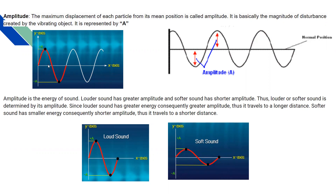If we look at this in graphical form, the maximum peak — the crest — represents the maximum height attained, represented by positive A. Similarly, the minimum point, which is the maximum valley on the negative side, is known as negative A. So positive A and negative A represent the positive amplitude and the negative amplitude. Amplitude is represented by the capital letter A.